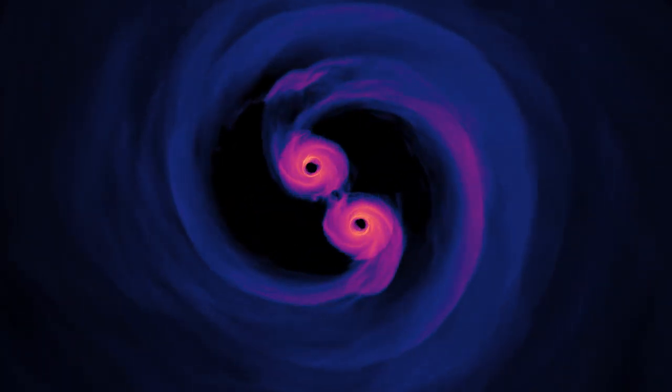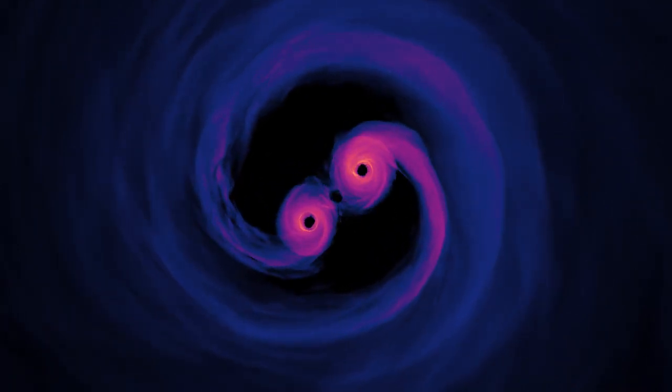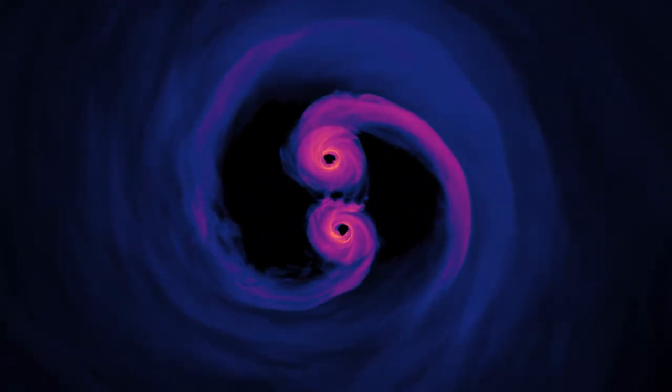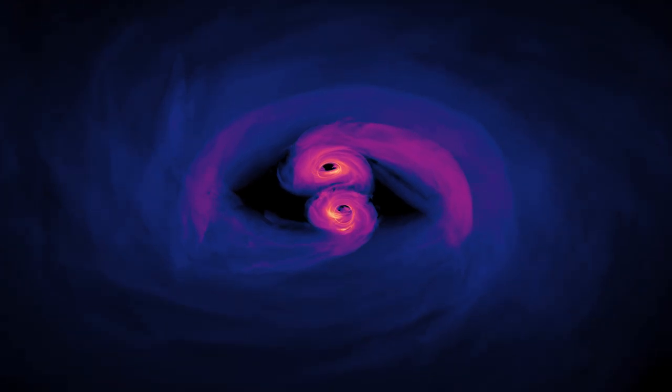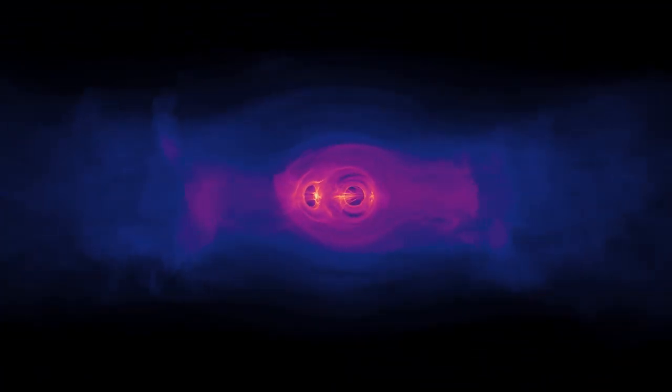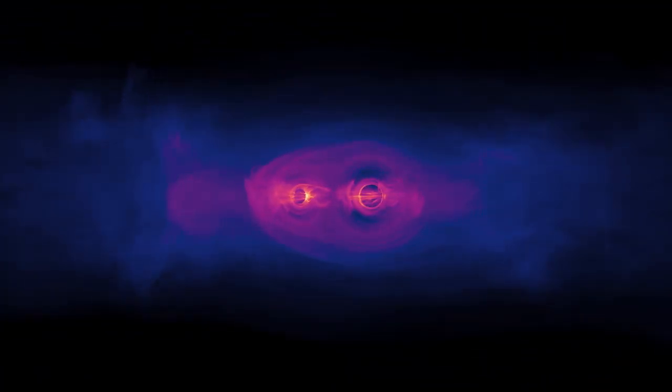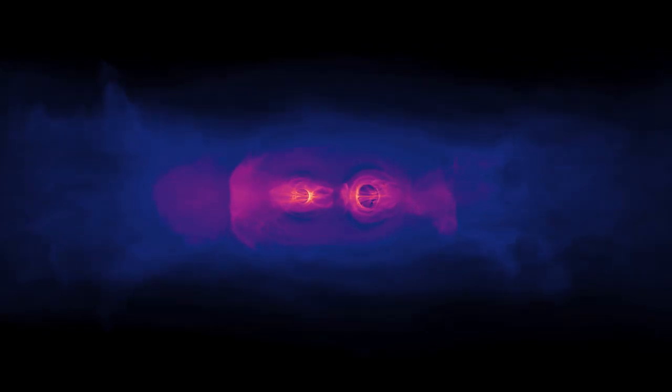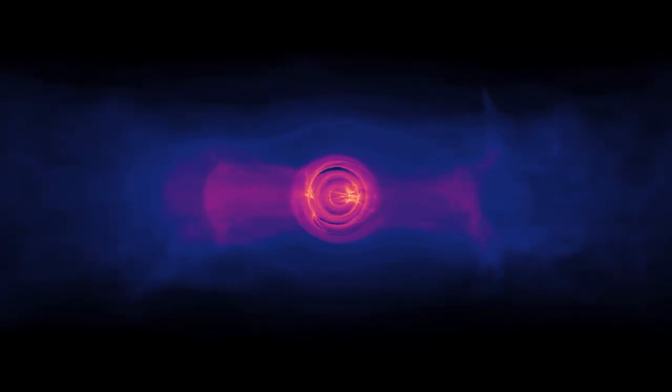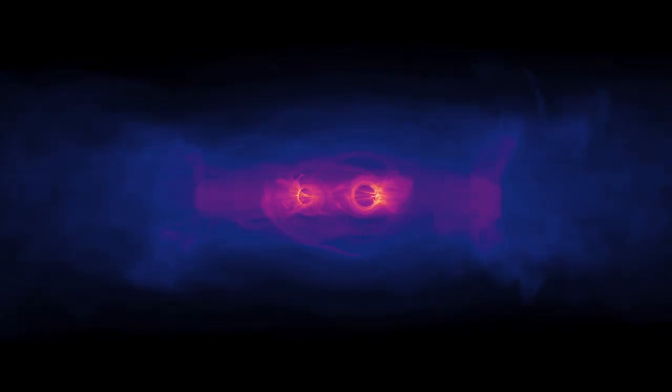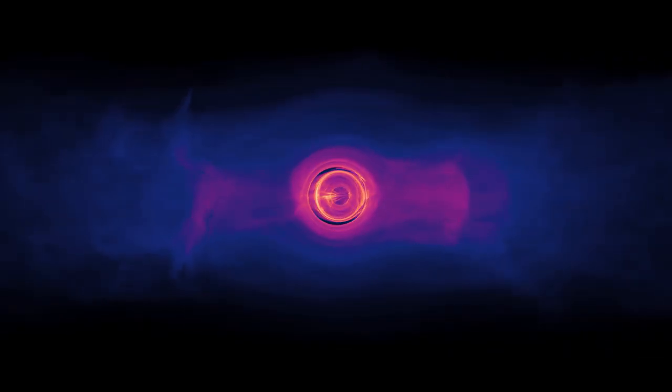They claim that this quasar is in the final phase of the merging process. They believe that this could help them predict what the final stages of a black hole merger might look like and show how long this process might actually take. This is what they call the final parsec problem and is yet unsolved as all theoretical models fail to explain this process.